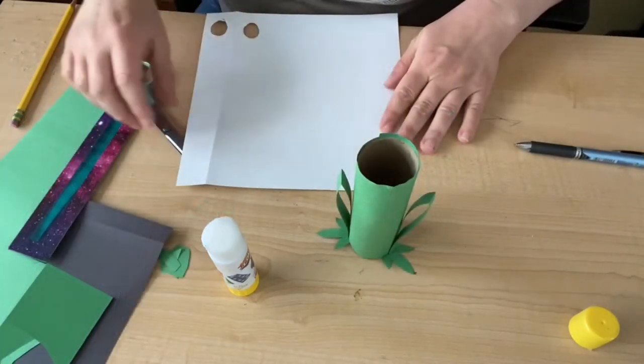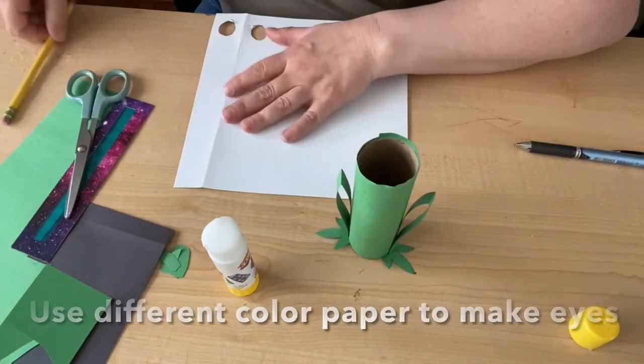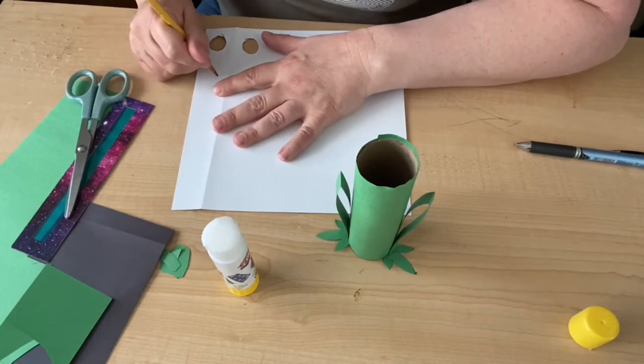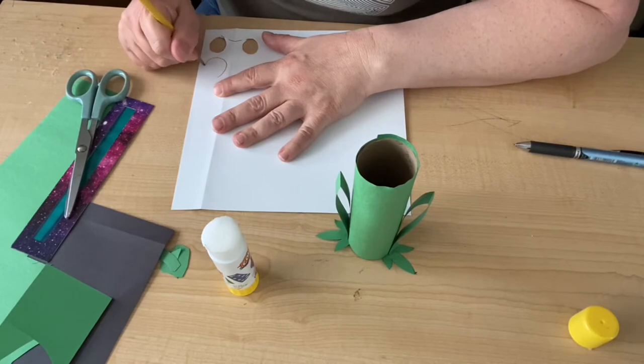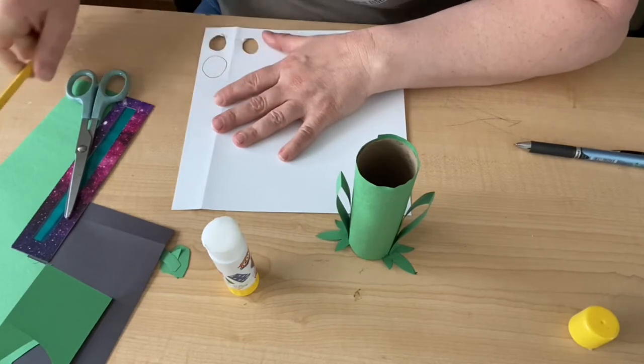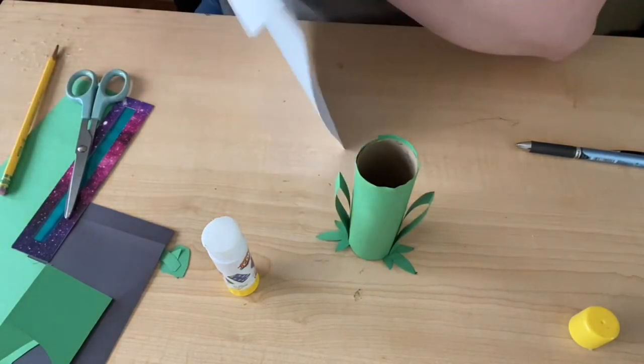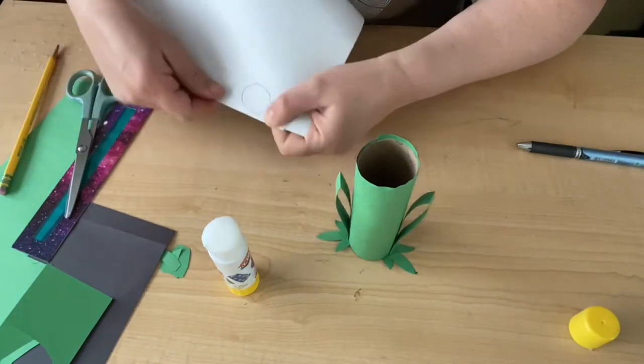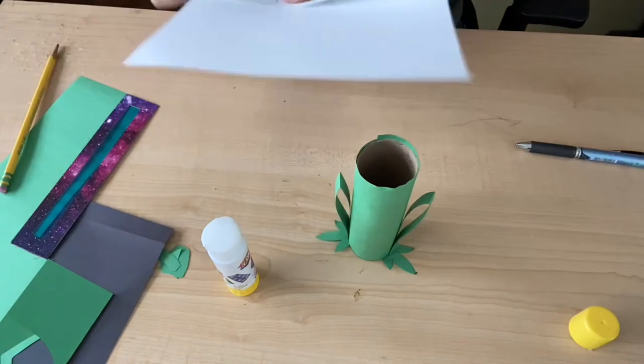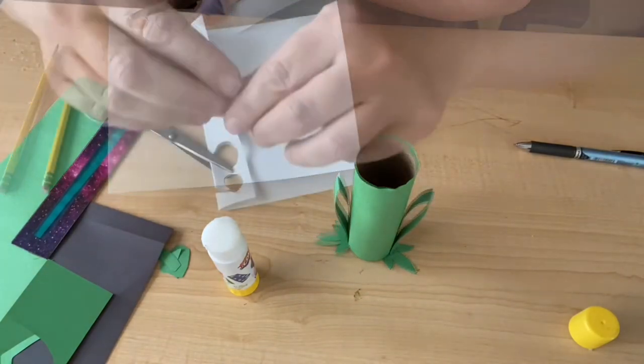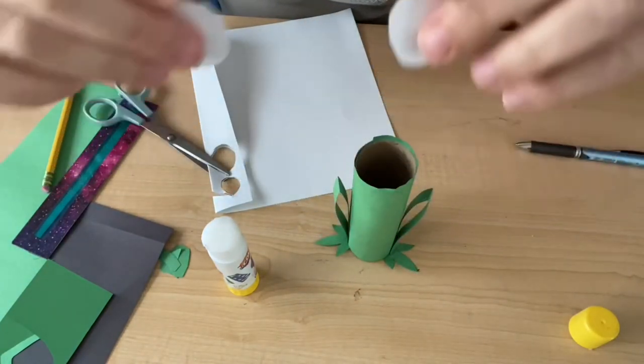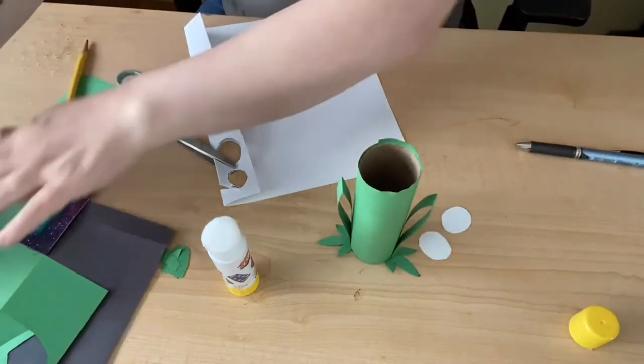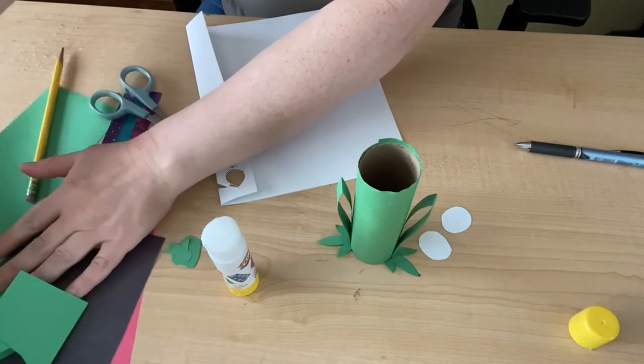The next thing to do is make some eyes. With that, I'm going to use my white paper. I am going to draw one circle, and then I'm going to do my trick from earlier so that I can cut out two circles at once and they'll be identical.